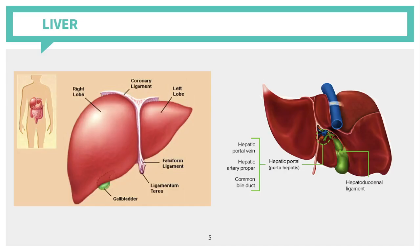Our learning objective for today will be to at least identify the different histological components of your liver, pancreas, and gallbladder. First, we will start with your liver. We all know that the liver is the largest internal organ of our human body. It weighs approximately around 1.5 kg, and embryologically it develops from the foregut, spanning the upper right and upper left abdominal quadrant. It is subdivided into two major lobes — your right lobe and your left lobe — separated by different ligaments.